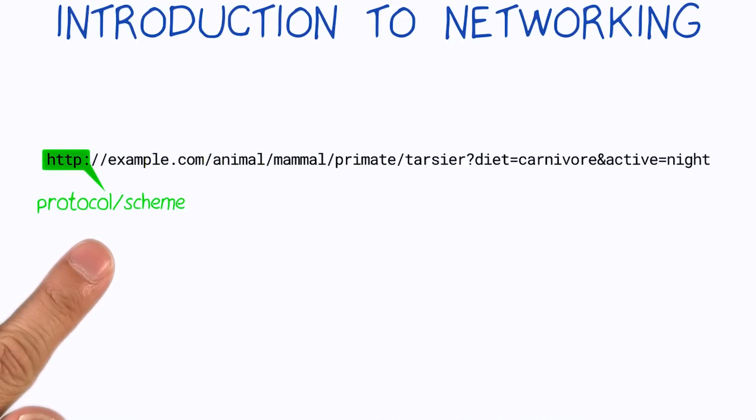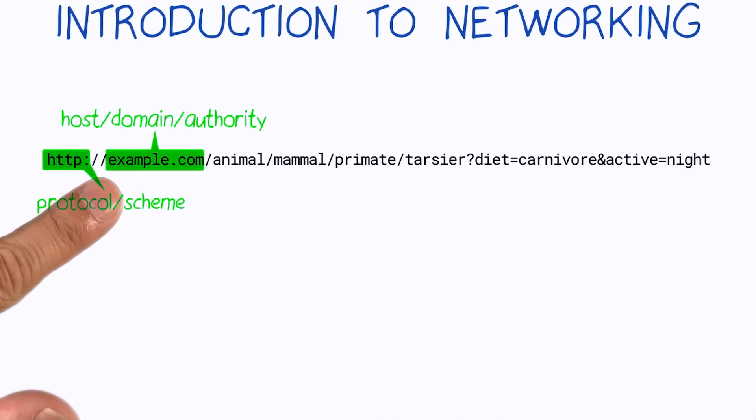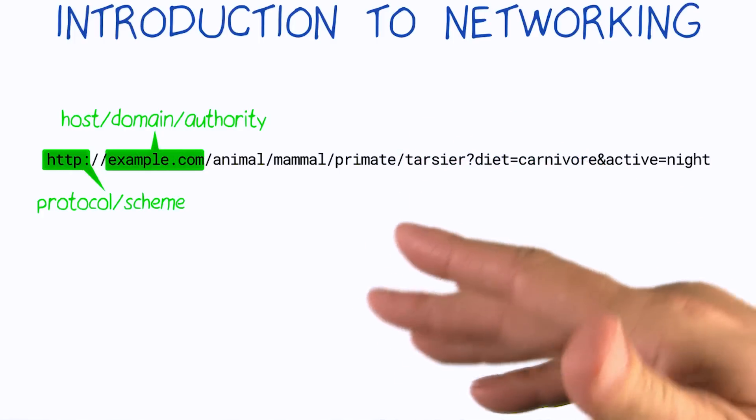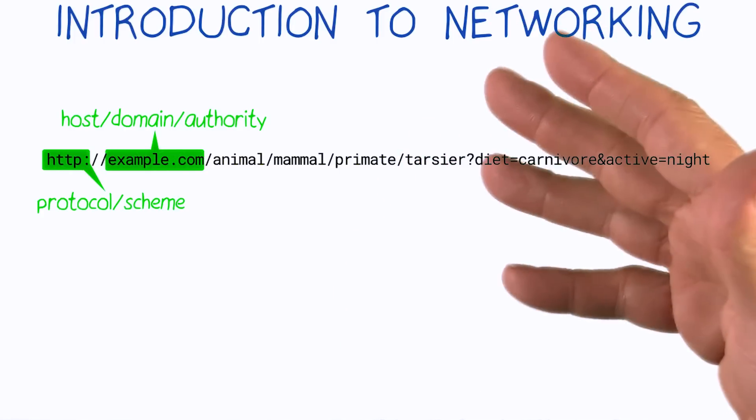Let's take a look at this example URL. The first part is called the protocol or scheme. This is usually going to be HTTP or HTTPS. The next part is called the host, domain, or authority. These all pretty much mean the same thing, the main identity of the web resource you're connecting to, like udacity.com or google.com.